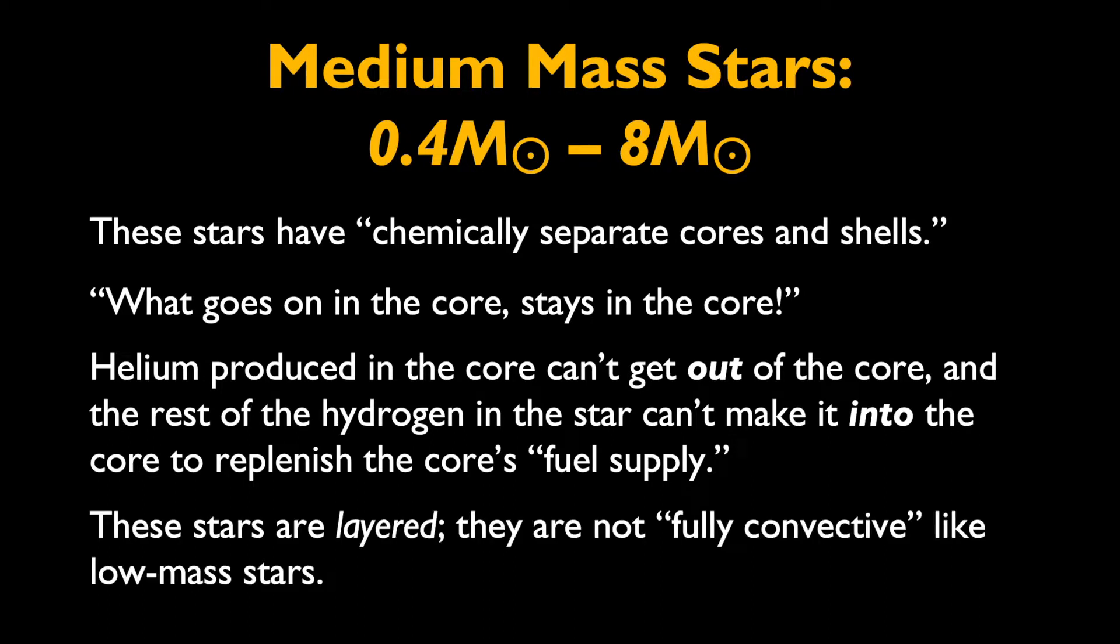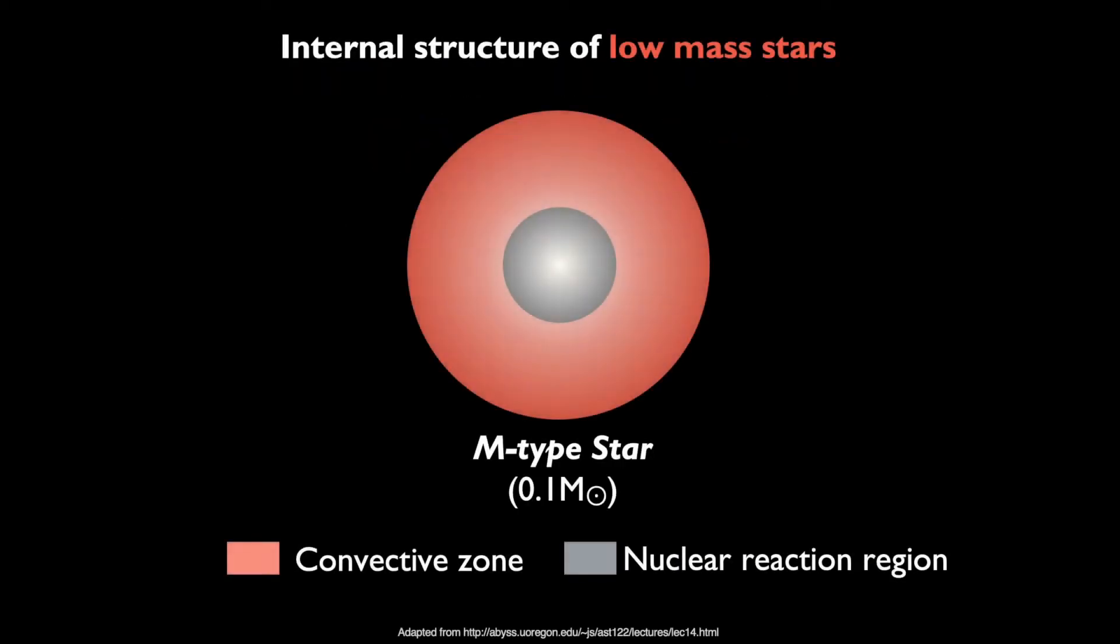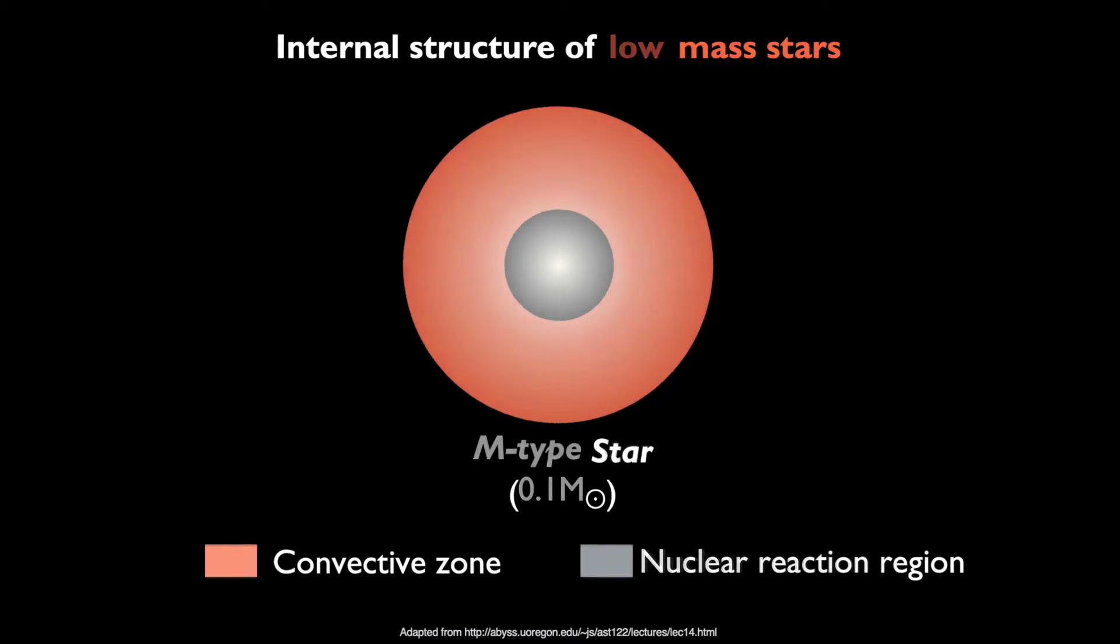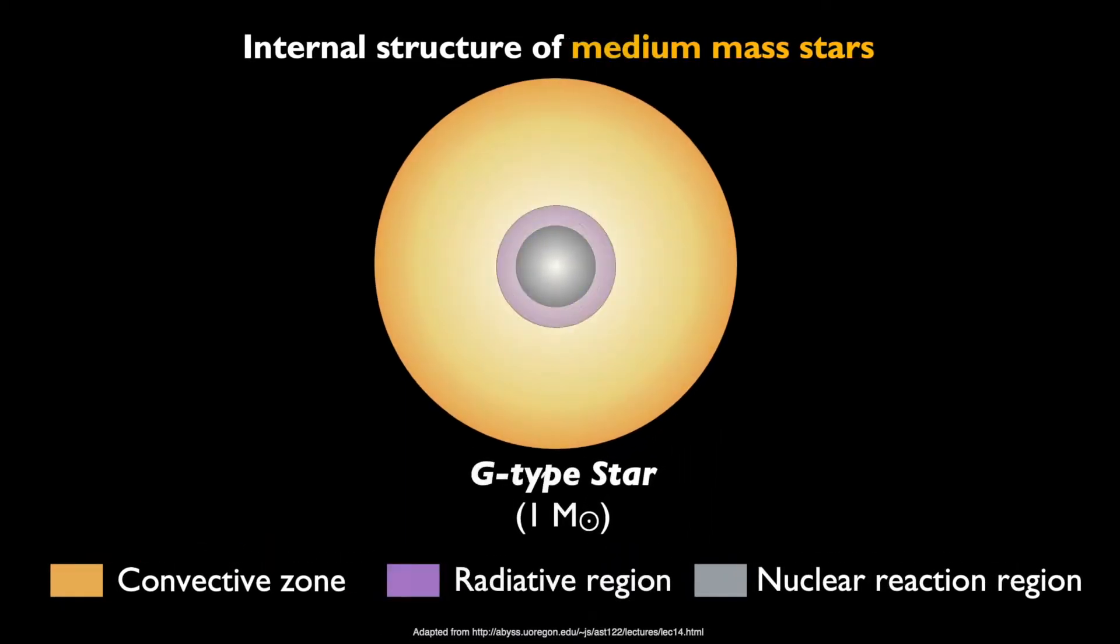For comparison, let's remind ourselves of the internal structure of the low-mass star and see how it changes as we begin looking at the internal structure of a medium-mass star instead. In a medium-mass star, this particular one being a one-solar-mass star, very similar to the Sun, we still have a core where thermonuclear fusion is taking place and a convection zone. But these two layers are separated by the radiative region, shown here in purple, that's sandwiched between them.